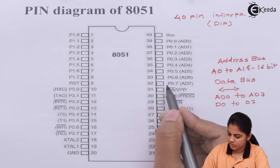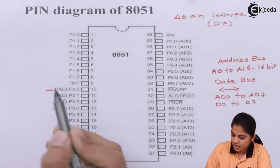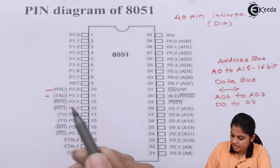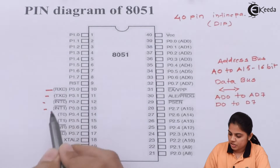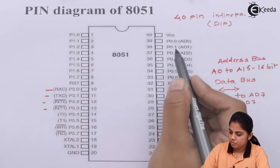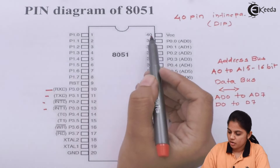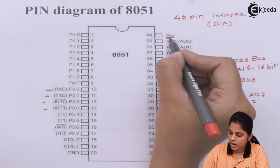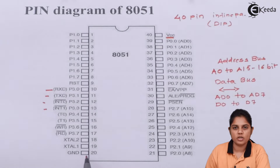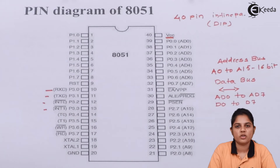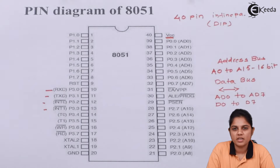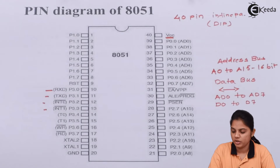We also have pins for RXD, TXD, INT0, and INT1 — we will see each pin individually. The microcontroller also requires VCC and ground connections. VCC should be given and the ground terminal should be connected to ground potential to activate the microcontroller chip.